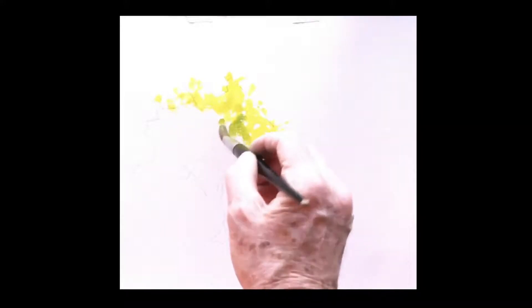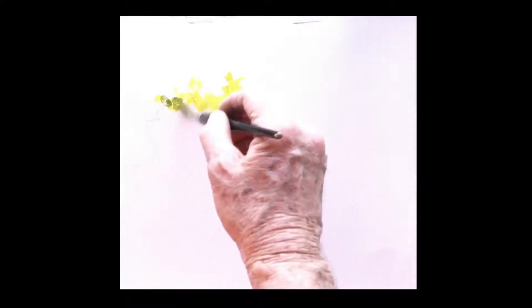And I'm saving some spots, what we call sky holes, where you can see the sky in between the branches. That's a little bit dry, teeny bit more water.